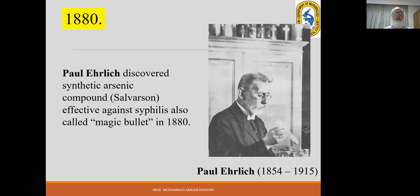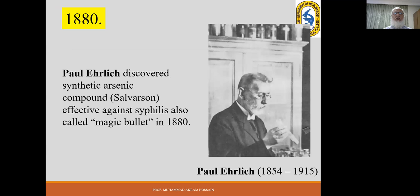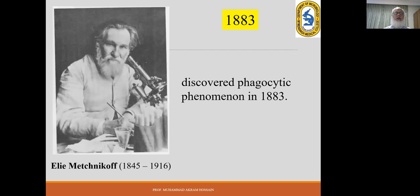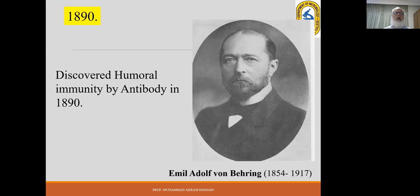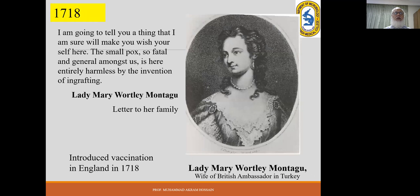Joseph Lister introduced aseptic surgery by using carbolic acid. Paul Ehrlich discovered the synthetic arsenic compound, also known as the magic bullet, in 1880. He was followed by von Bering. Lady Mary Montagu introduced variolation from Turkey to England, discussed in more detail in the immunology lecture.